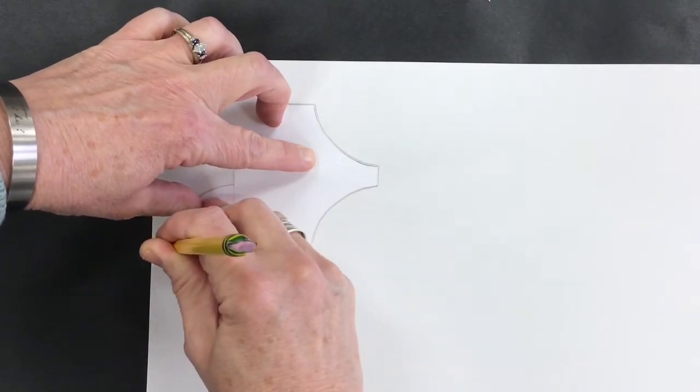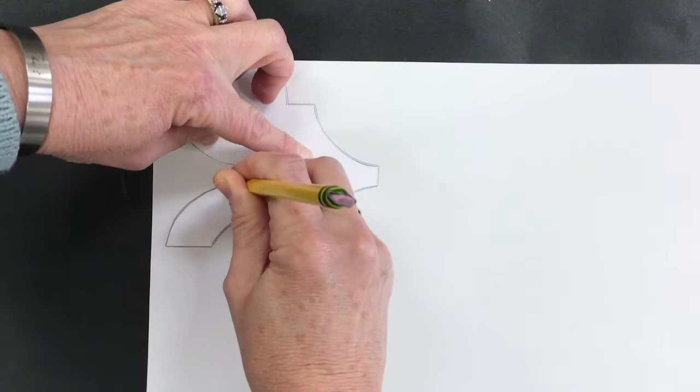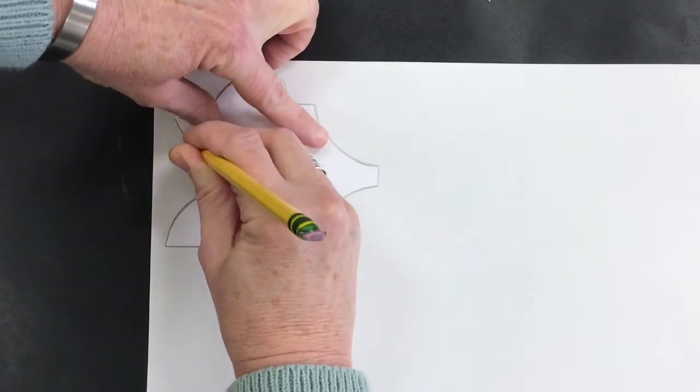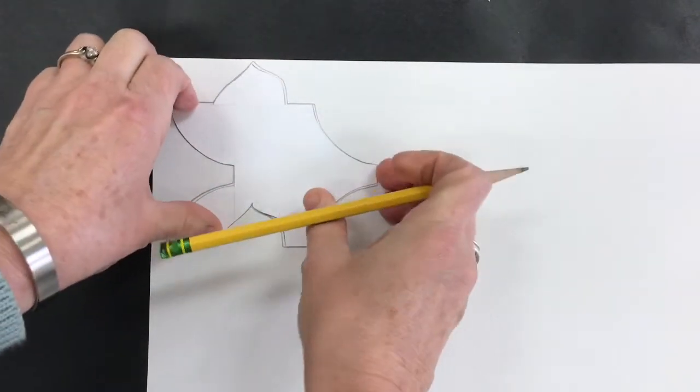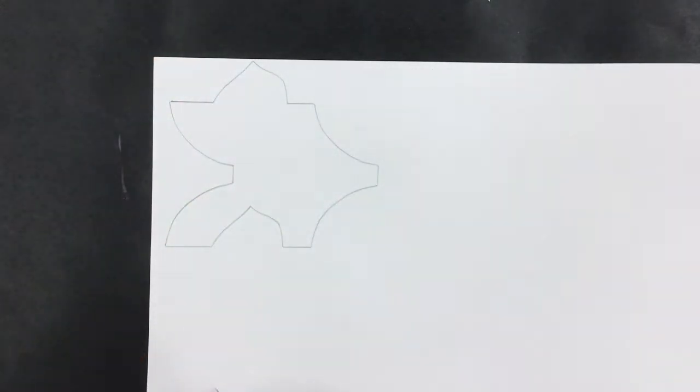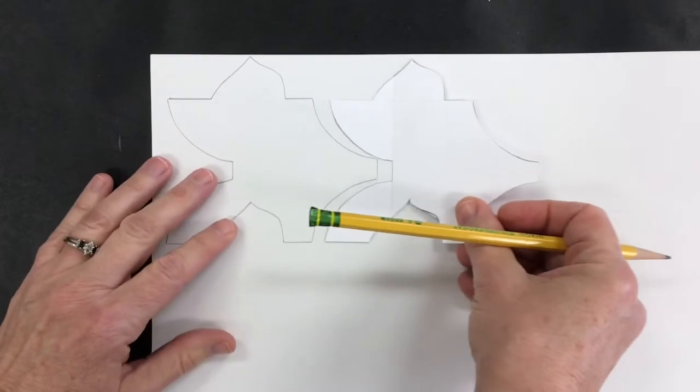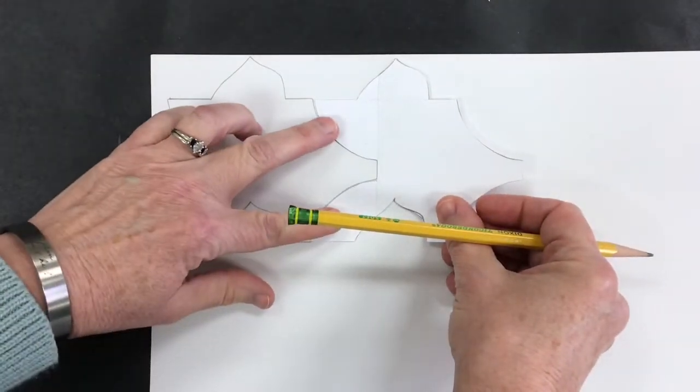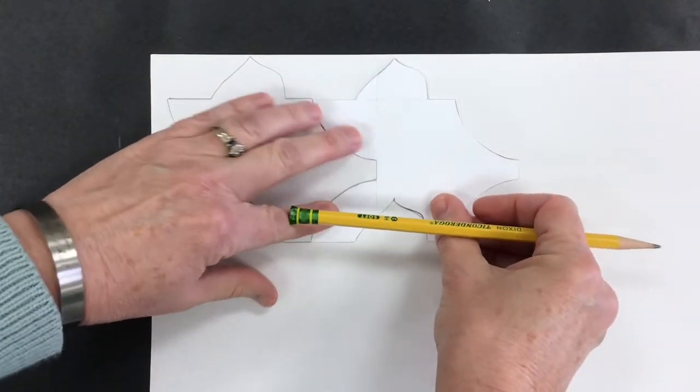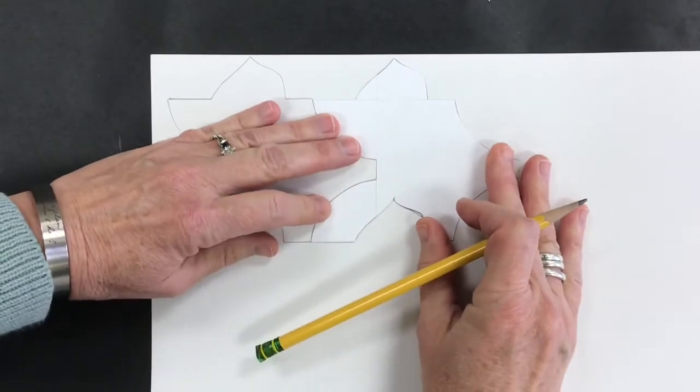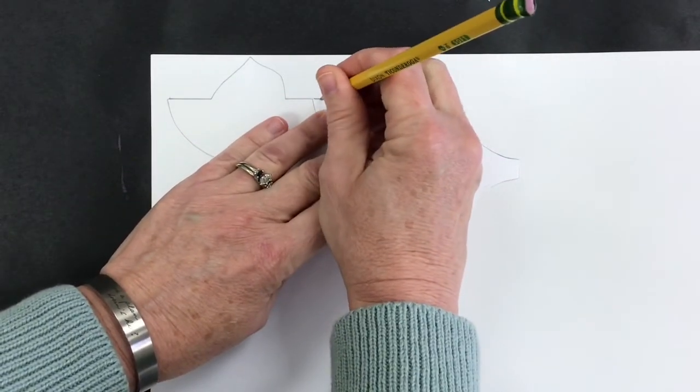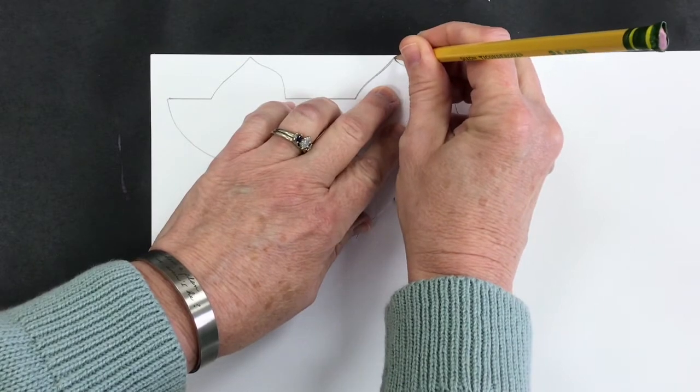Sometimes you have to move your hand a lot, and it's kind of tricky holding it in place and not letting that template move. Okay, so I've traced around it once. Now I'm going to slide it to the right and it should match up. If it doesn't, something is in the wrong place and you might have to readjust or take some tape off and fix some things.